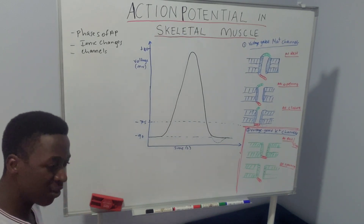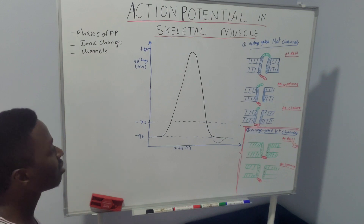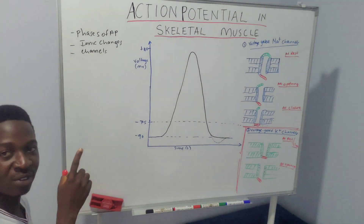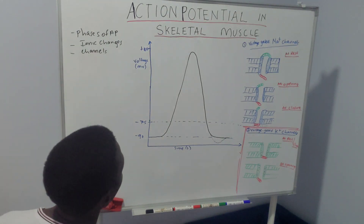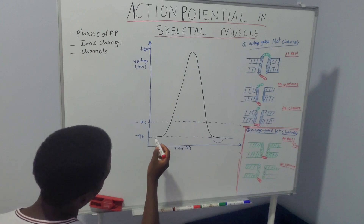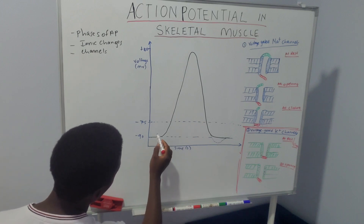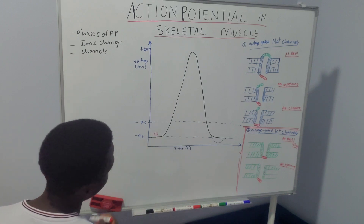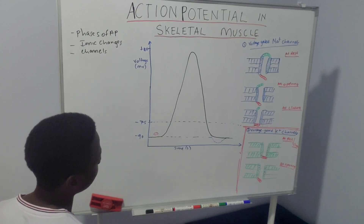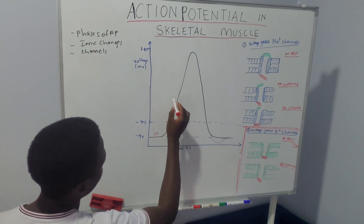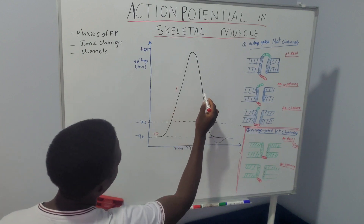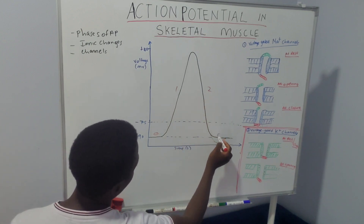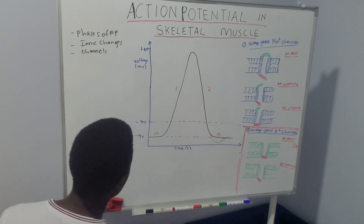So to start with, there are different phases of the action potential of this muscle. When the membrane is at rest, we have phase 0, then phase 1, then phase 2, and then we are back to 0.